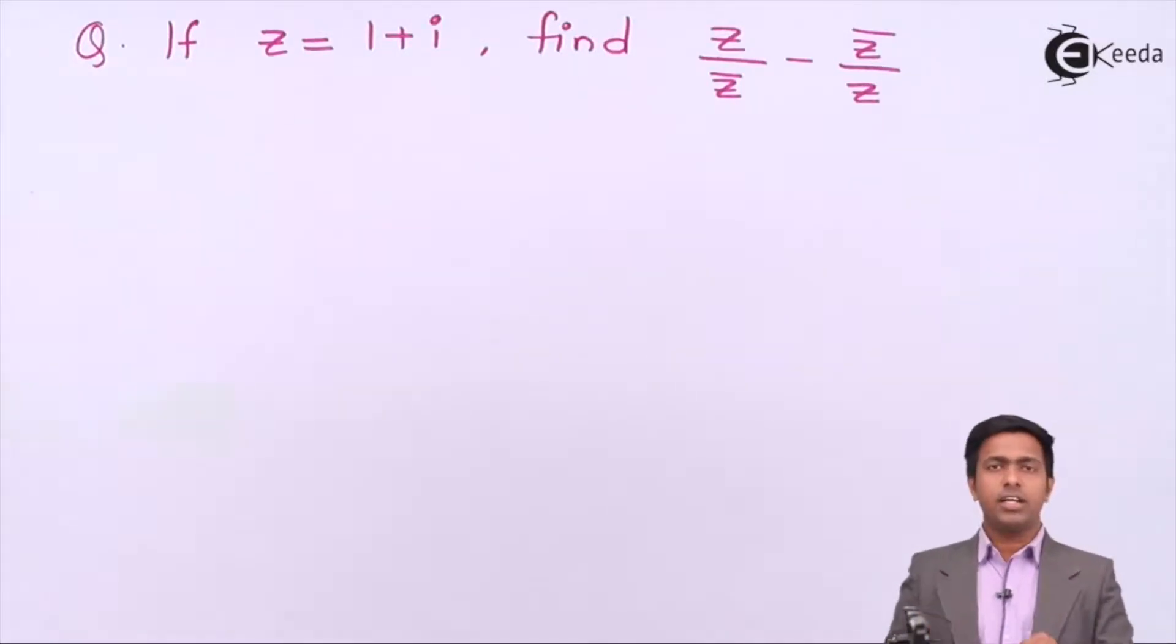You can see here that the value of z is given as 1 plus i. It is a complex number and we have to find out the value of z upon z bar minus z bar upon z.